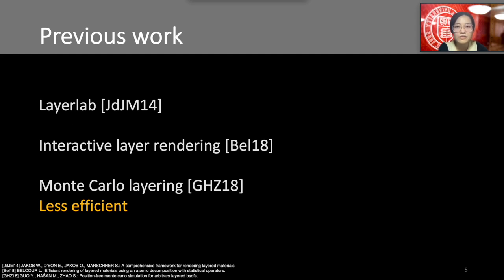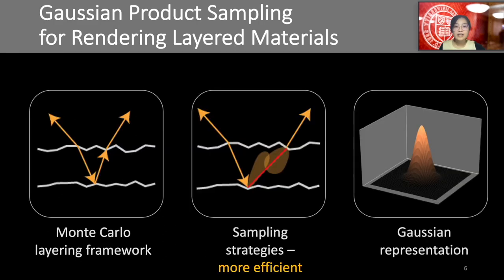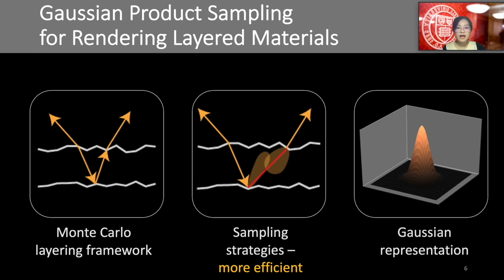One drawback of their work is speed. On top of the Monte Carlo layering framework, we also introduced two new sampling strategies that are based on a parameterized Gaussian representation of the single layer BSDF. Our method substantially reduces variance in rendering isotropic layered surfaces compared to Guo's method.